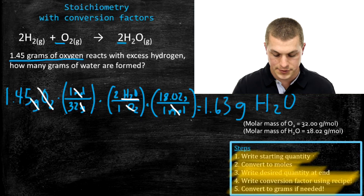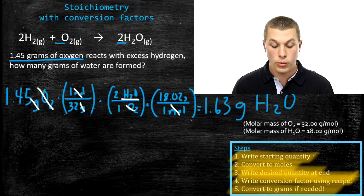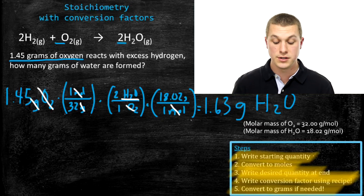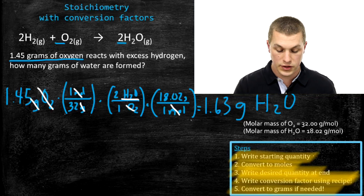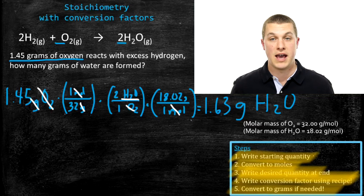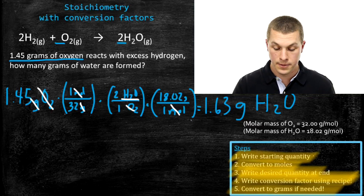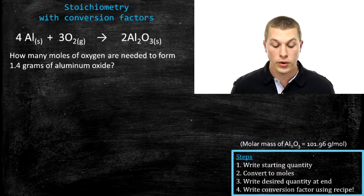That's our final answer for this problem. It was slightly more complicated than the last one — we converted to moles first, then all the way to grams of our product. These chemical recipes allow us to think about how much mass we put in and how much mass we get out.